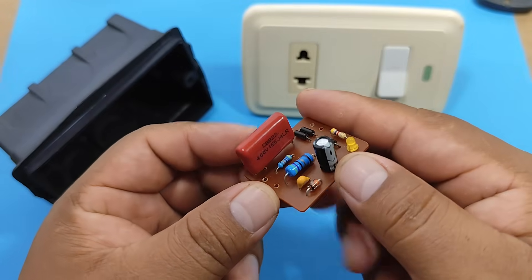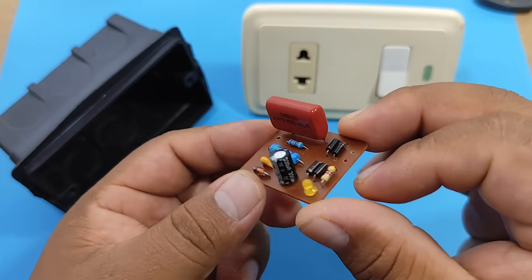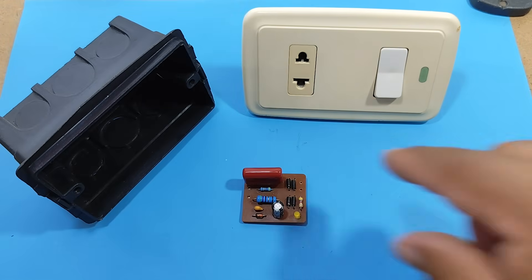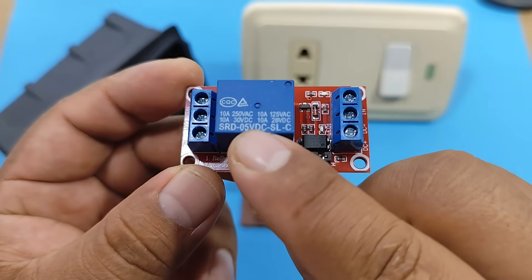In this case, we're going to use the capacitive power supply we made in a previous video. Next, we're going to need a 5 volt or 12 volt relay module.